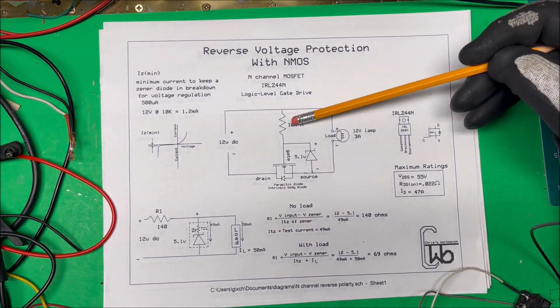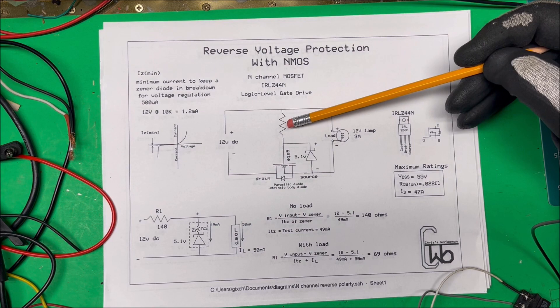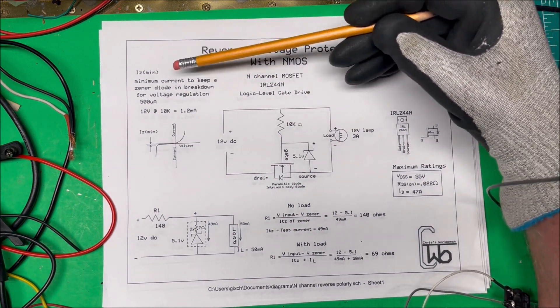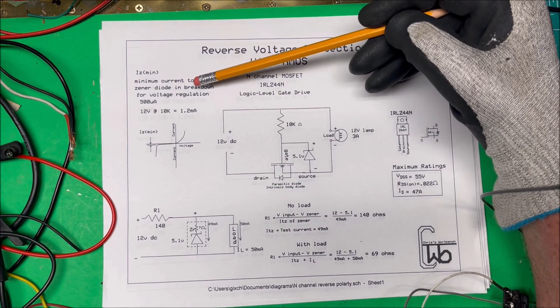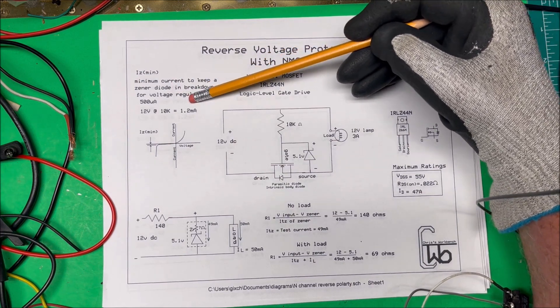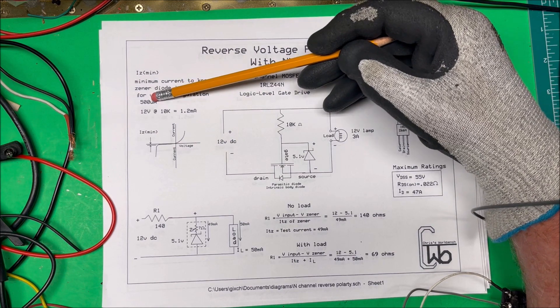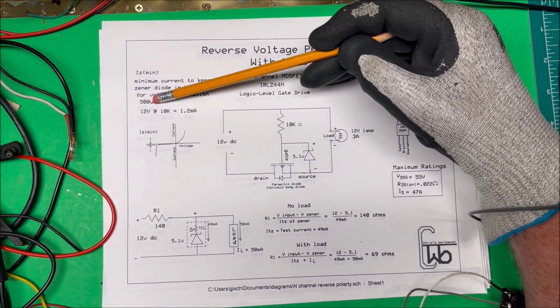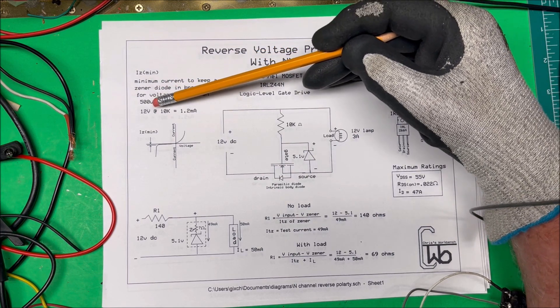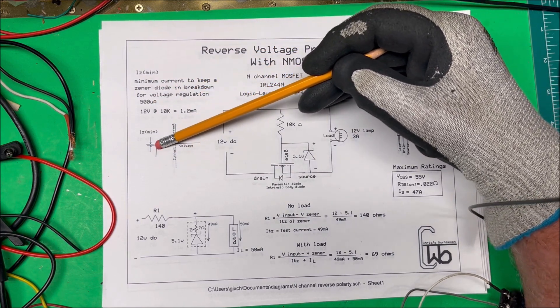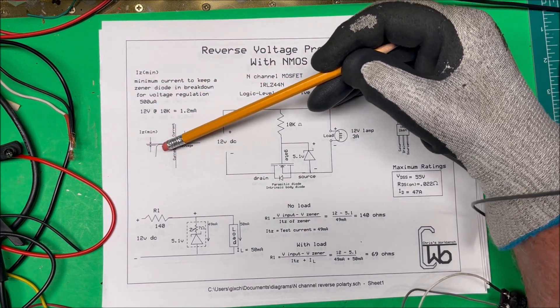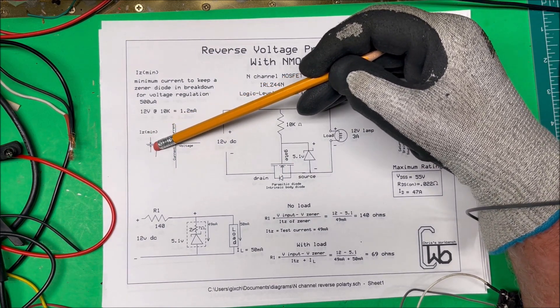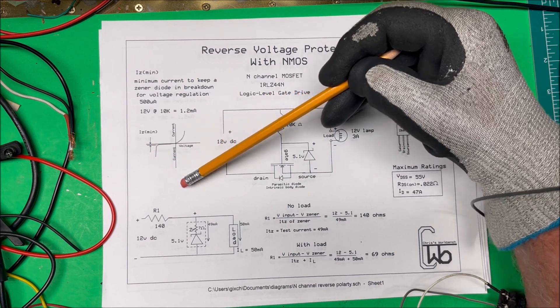Now why are we using a 10k up here or how can we get away with using a 10k? So in the data sheet the IZ minimum, the minimum current to keep a Zener diode in breakdown for voltage regulation in this particular one is 500 micro amps or a half a milliamp. So here it is down here, this is the minimum right here so this line comes below this line a little bit here and it needs a little bit of current before it breaks down here.